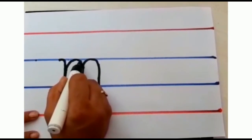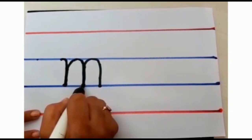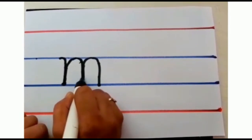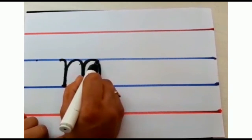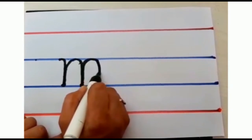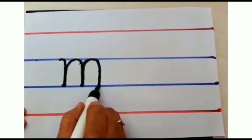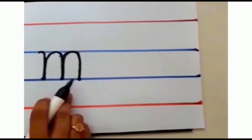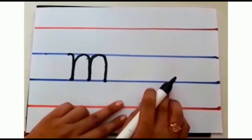Touch the blue line. This is a small m. M comes before n. Now I am going to show you how to write small n.